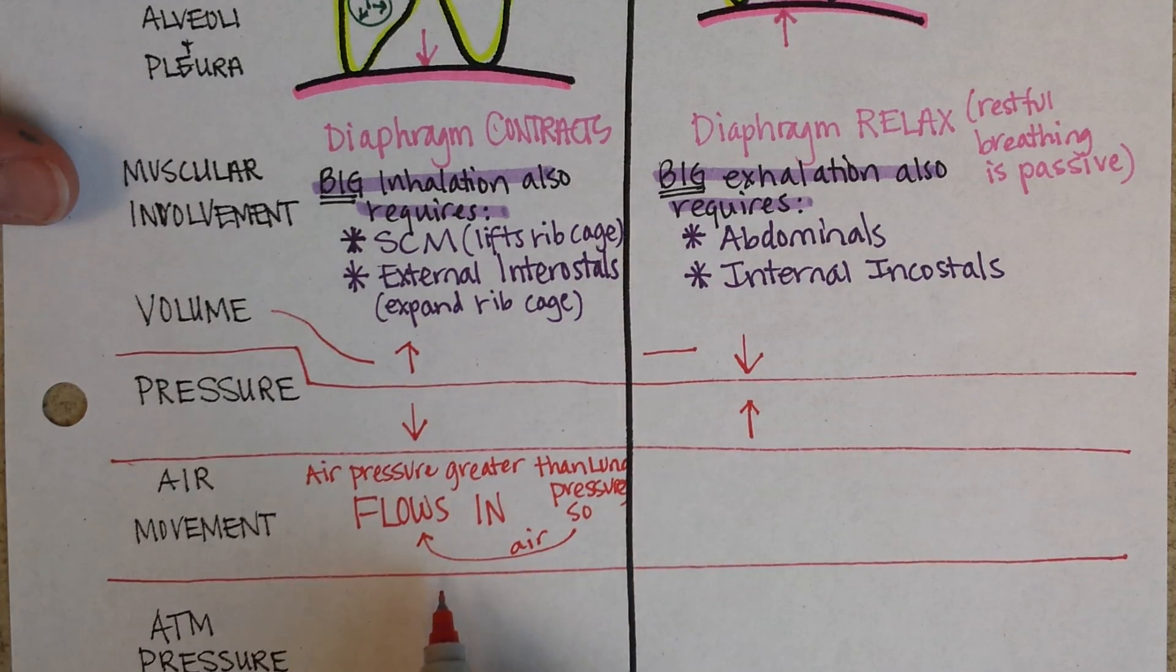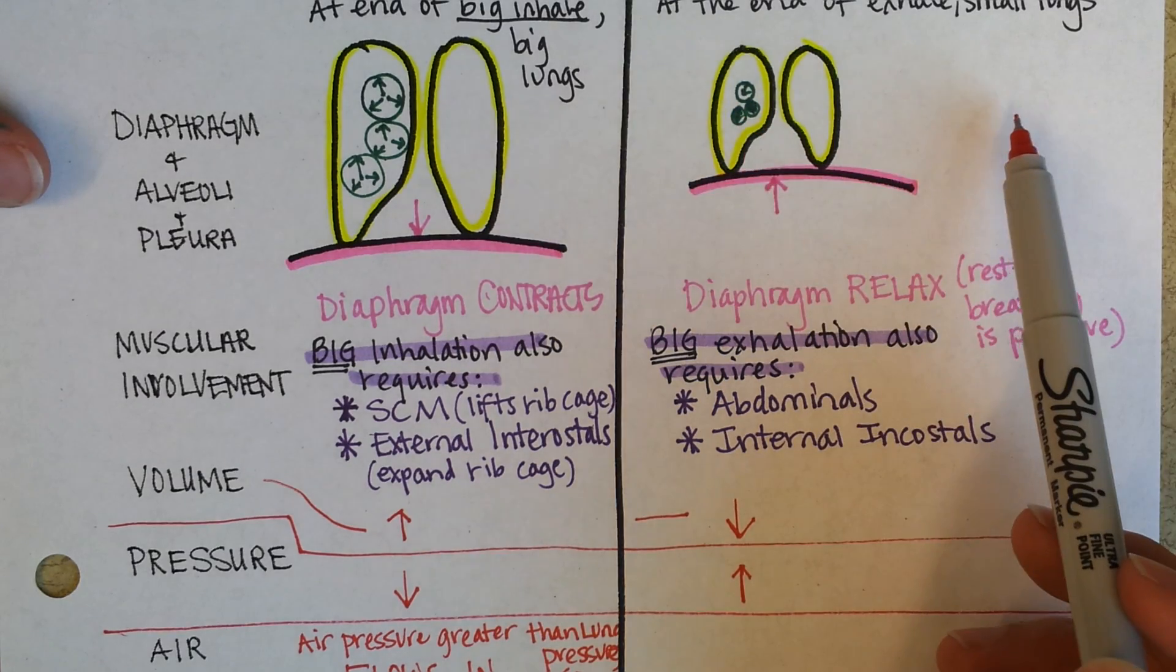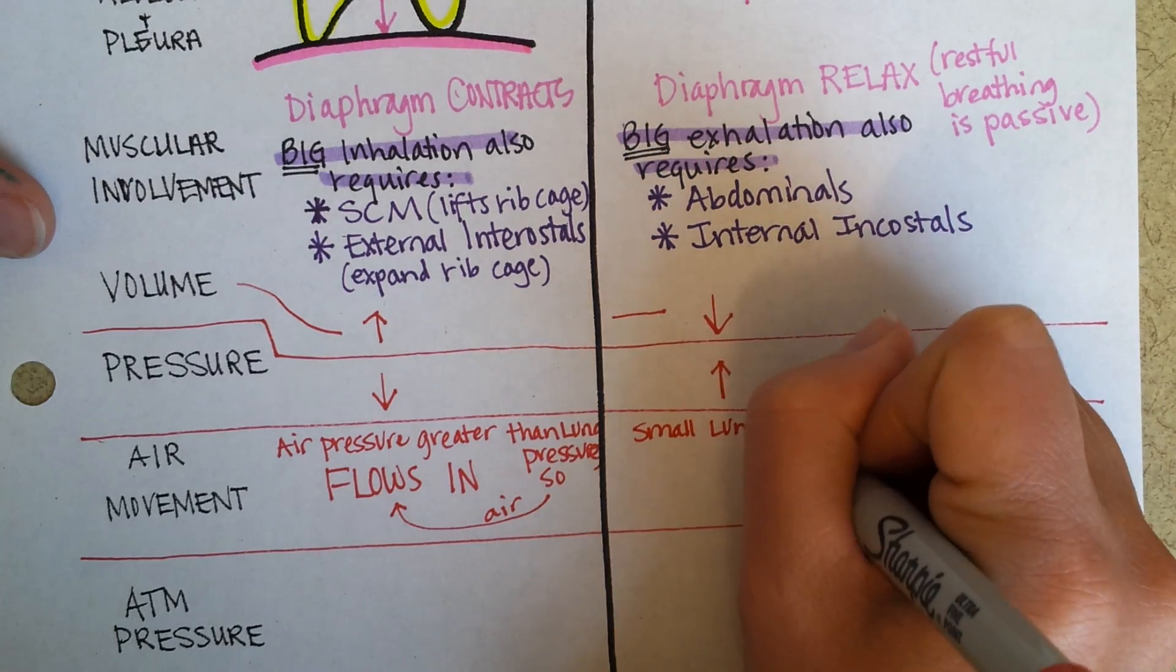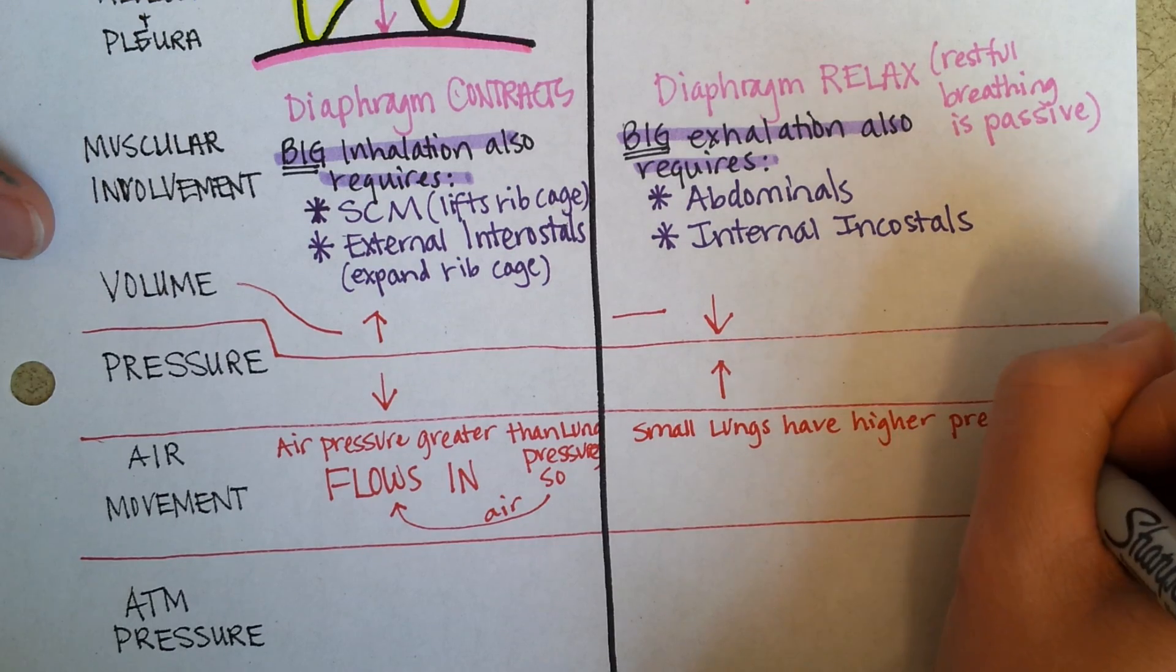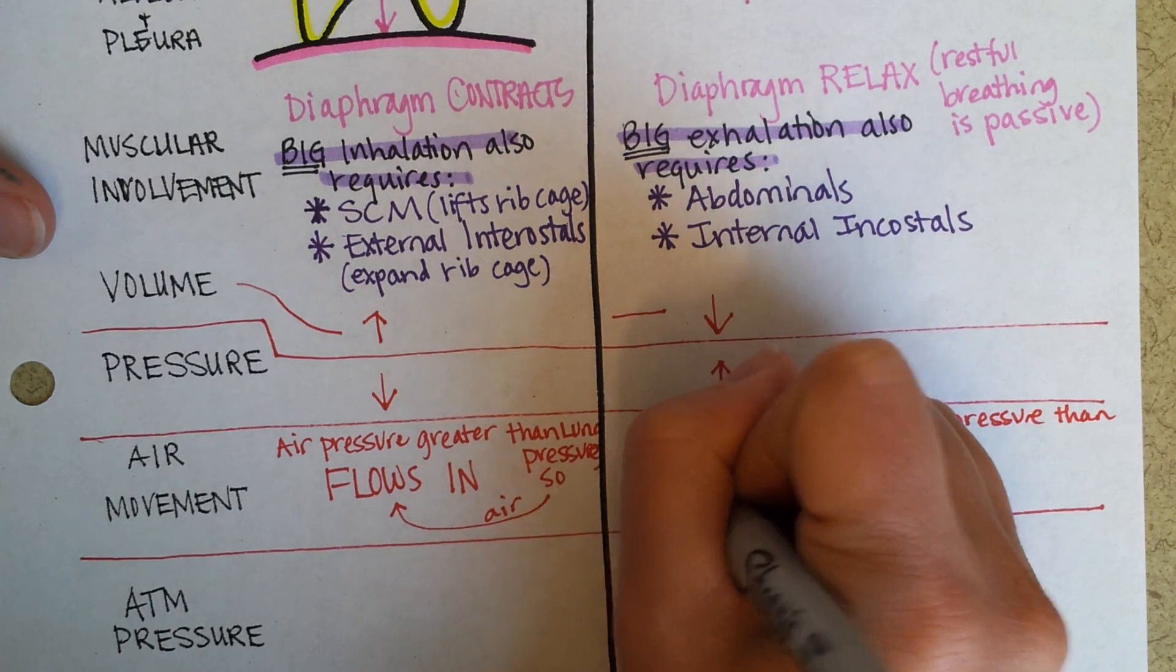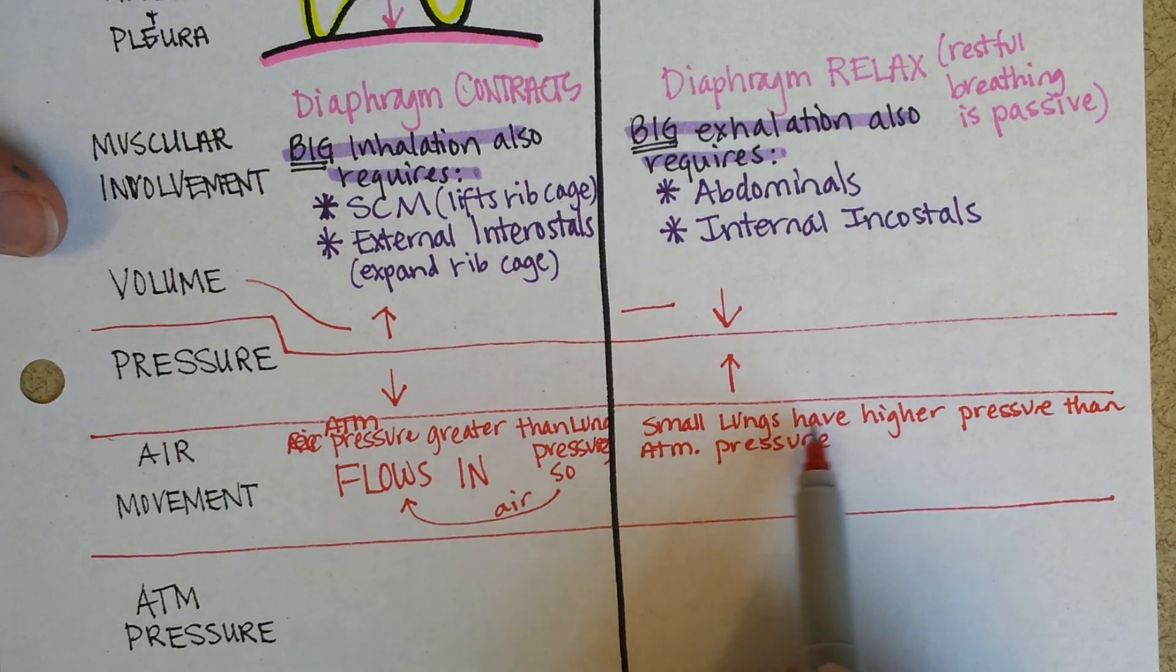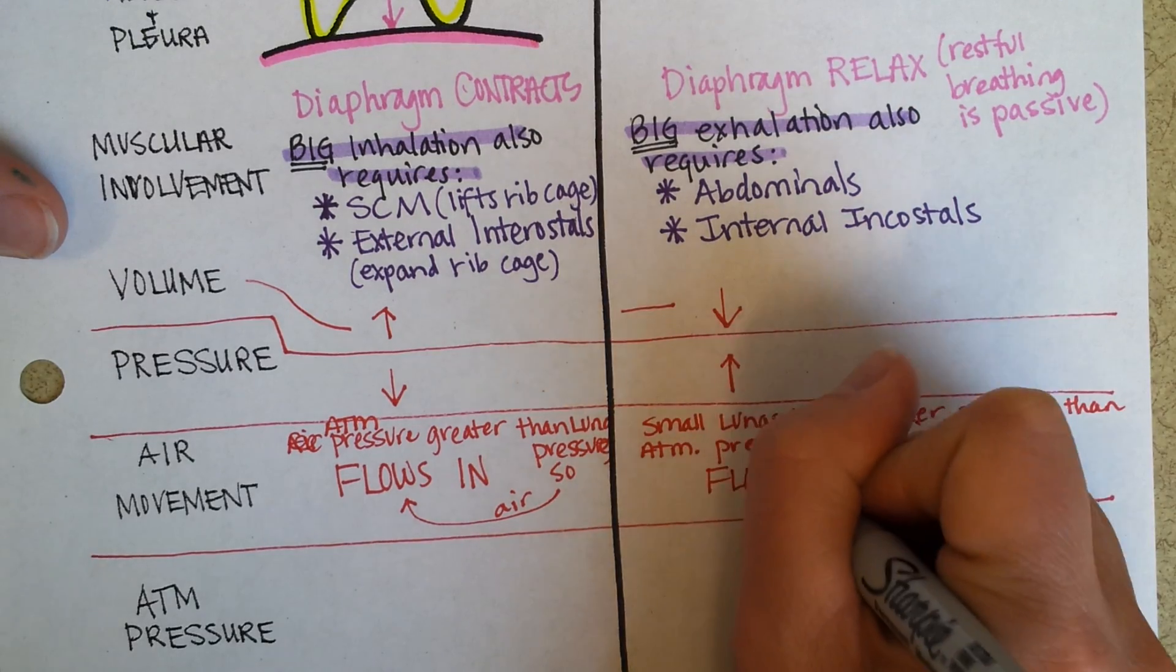And then in order for us to exhale at that point, we make the lungs so tiny that the pressure in here is greater than it is outside of the body. And so air wants to flow out. And atmospheric pressure, I should say instead of air pressure, atmospheric pressure. So small lungs have higher pressure than atmospheric pressure, so air flows out.